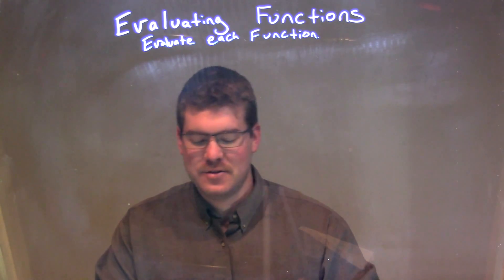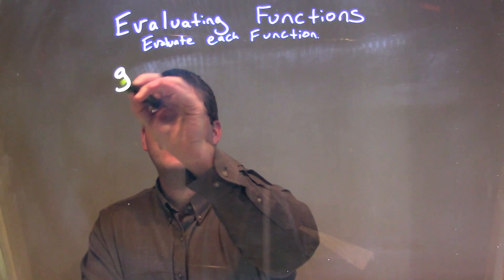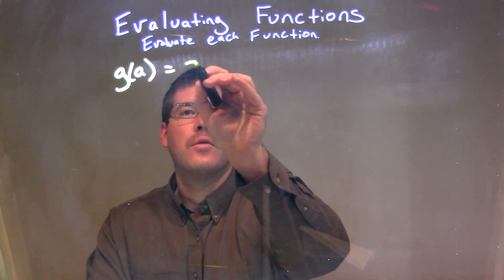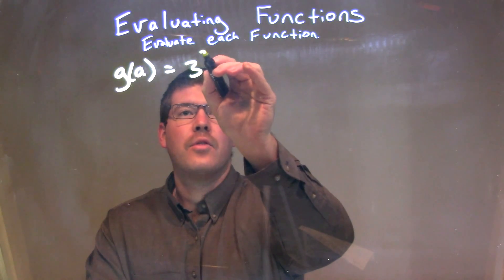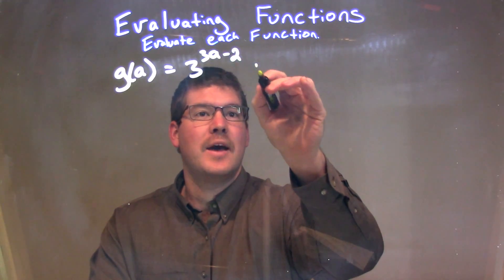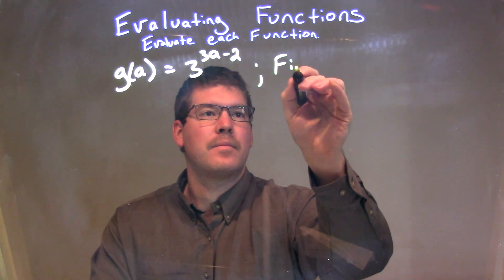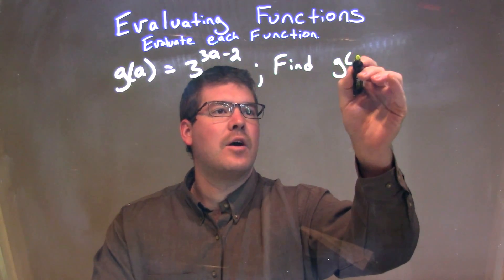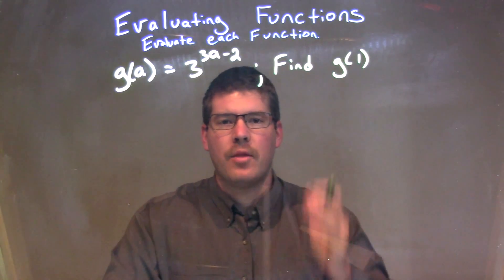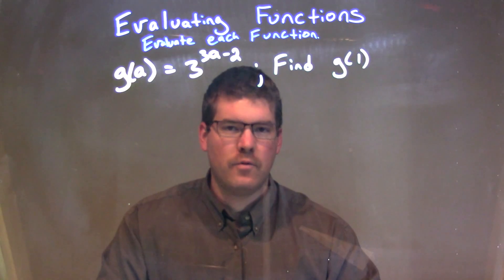So, if I was given this function, g of a is equal to 3 to the 3a minus 2 power, and we had to find g of 1. All right, well, since we're given our function and that we are asked to find g of 1,